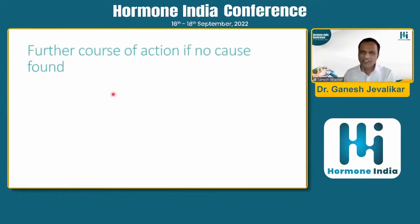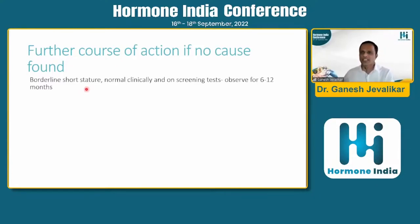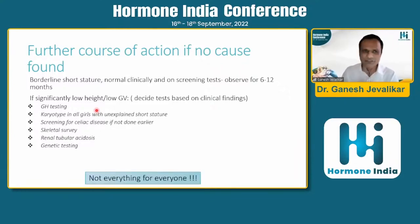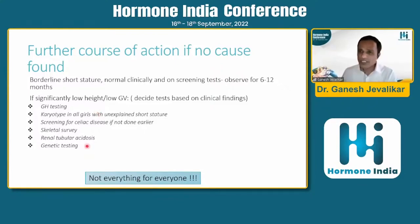If no cause is found on screening tests and the child is just borderline short, observe for six to twelve months to document growth velocity. If the child is significantly short or has had significantly low growth velocity, several second-line tests are available — but not everything is for everyone. Clinical parameters guide which tests are important. Karyotype is important in girls with unexplained short stature. Testing for renal tubular acidosis is relevant, and for children with severe short stature — height below three standard deviations — genetic testing should be considered.